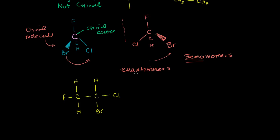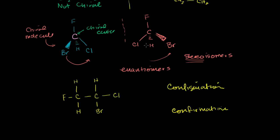I should make one clarification. I've been using the words 'configuration' and 'conformation' somewhat interchangeably, but I should be more exact. When you talk about a configuration, you're talking about a different structure — to go from one configuration to another, you actually have to break bonds and reassemble them. These enantiomers are different configurations because you would have to swap the bromine and hydrogen positions relative to the carbon.